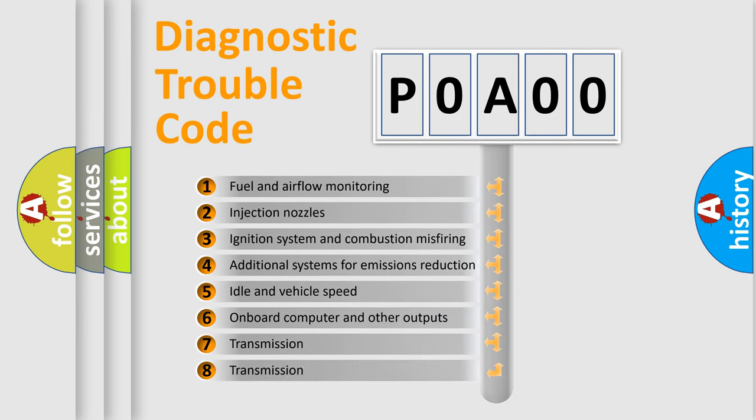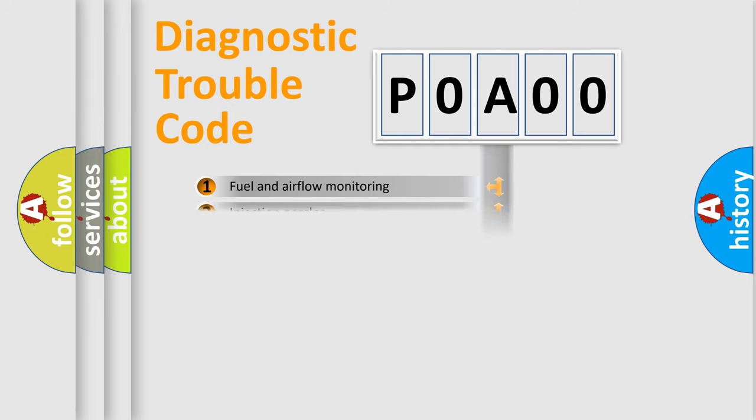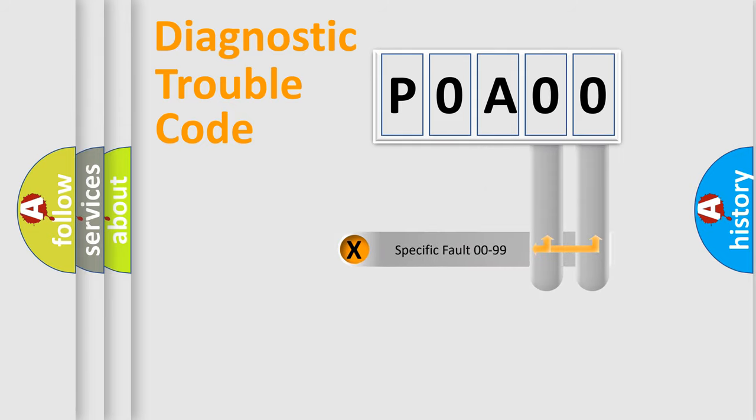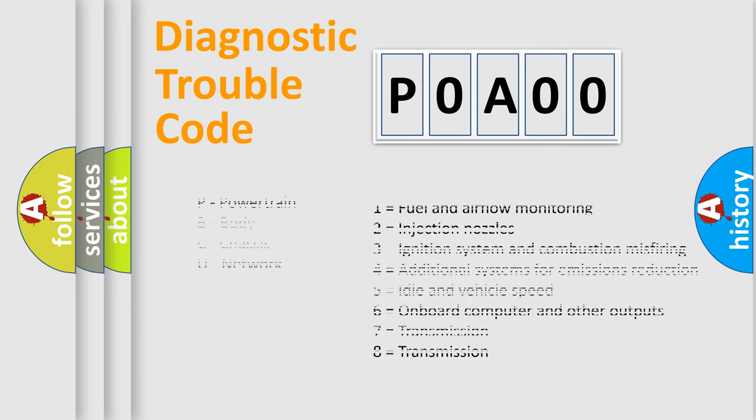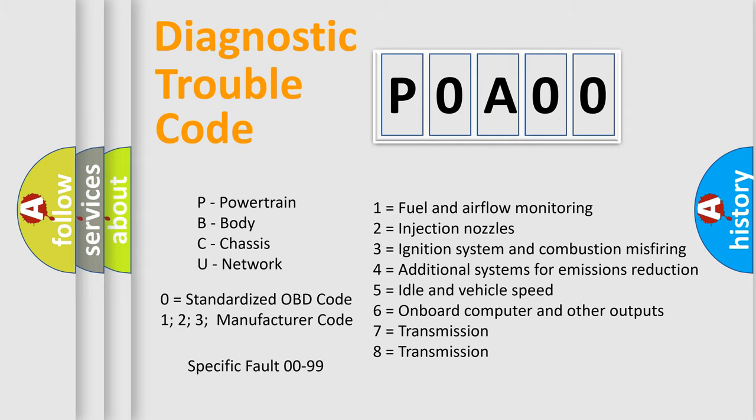The third character specifies a subset of errors. The distribution shown is valid only for the standardized DTC code. Only the last two characters define the specific fault of the group. Let's not forget that such a division is valid only if the second character code is expressed by the number zero.